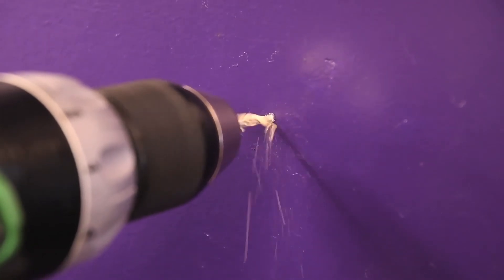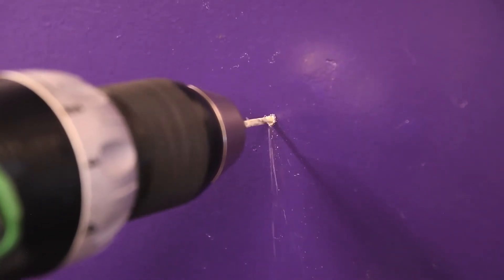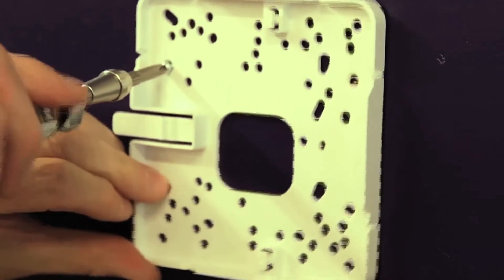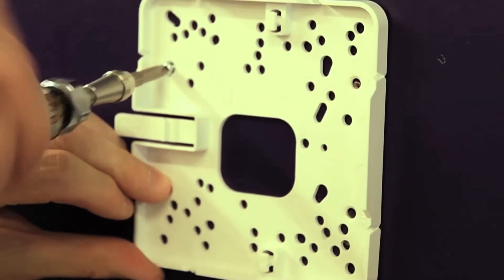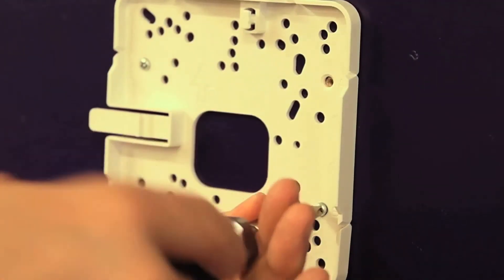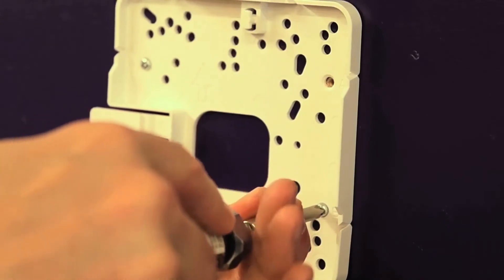Drill the holes with the appropriate drill bit sizes for the anchors or screws to be used. Insert anchors if appropriate. The screw-in type is recommended. Then attach the bracket with two screws into the holes or anchors.